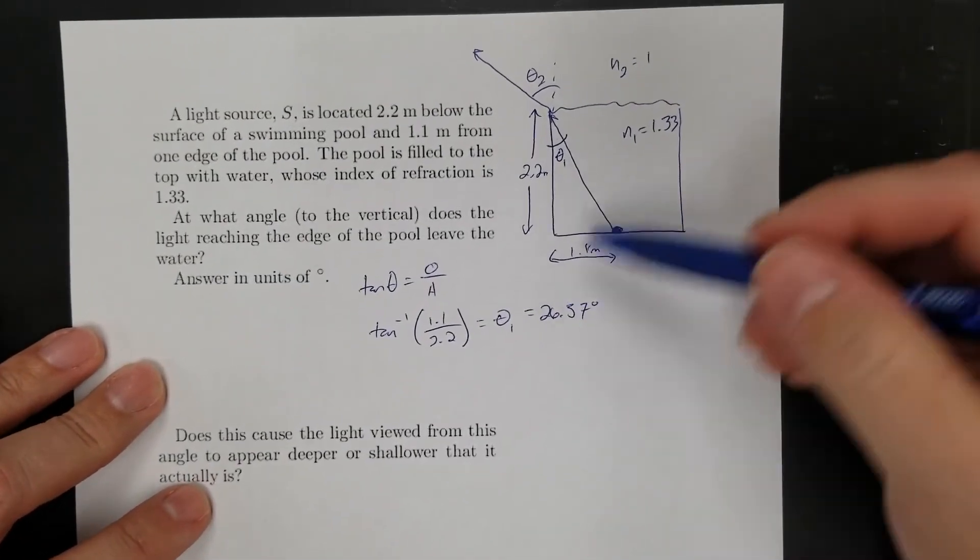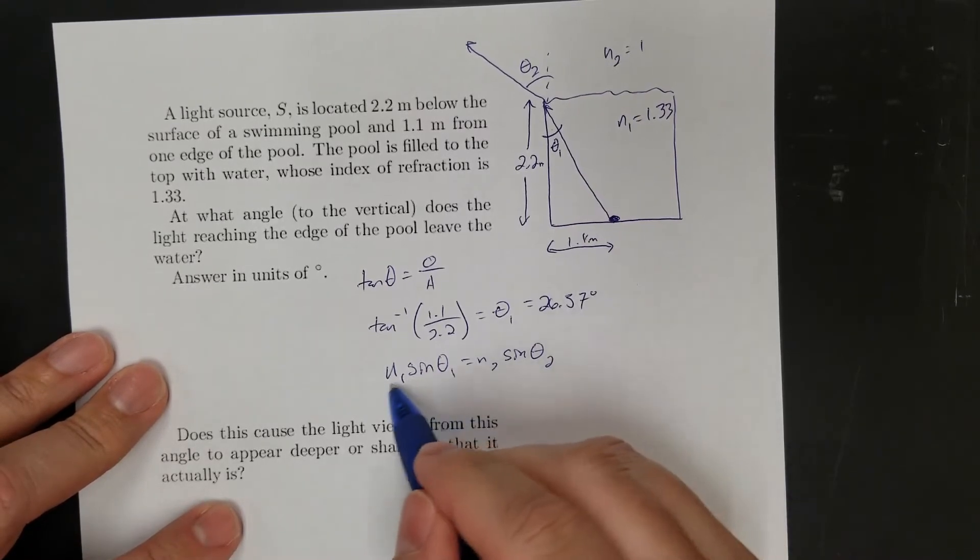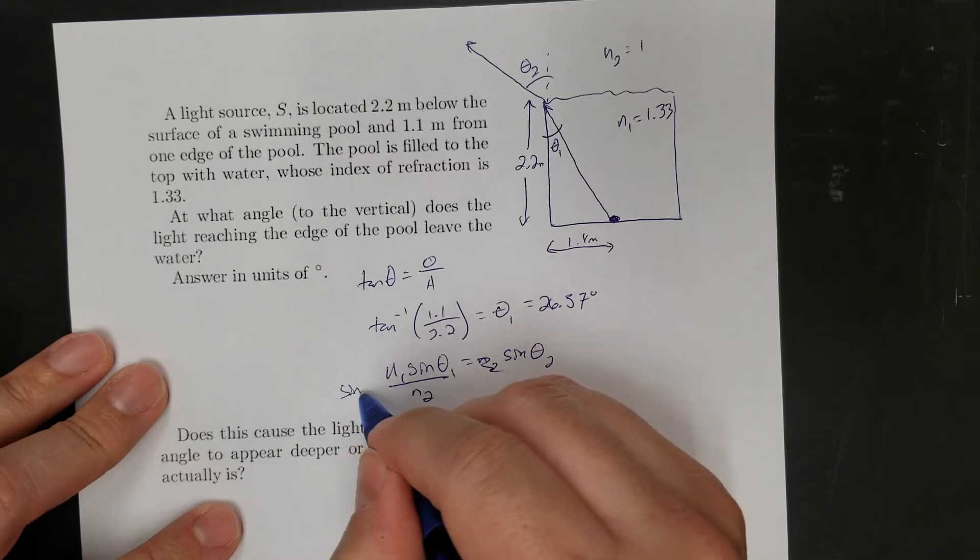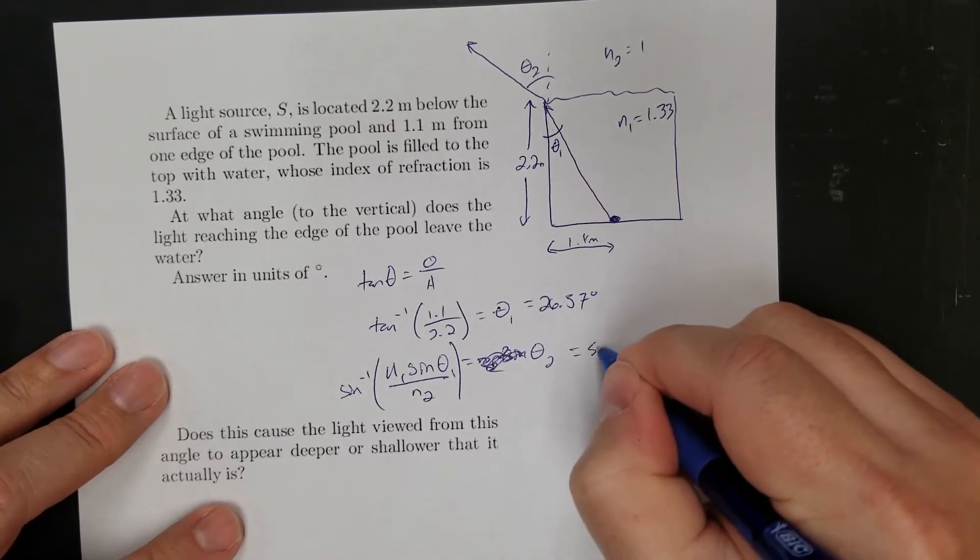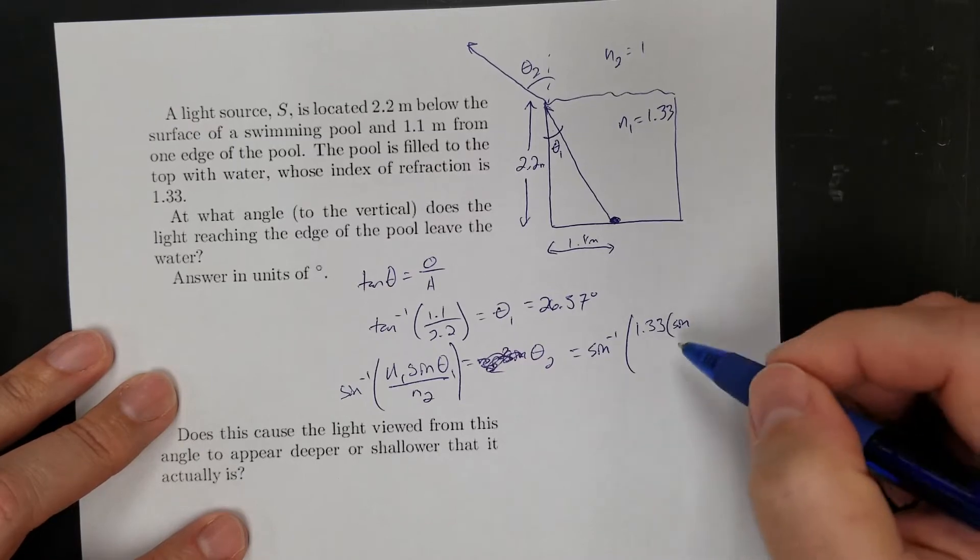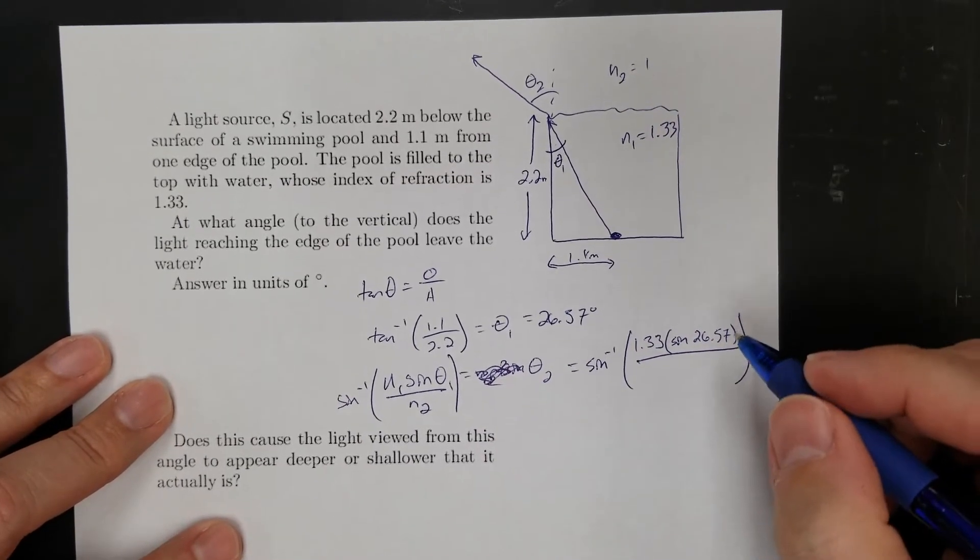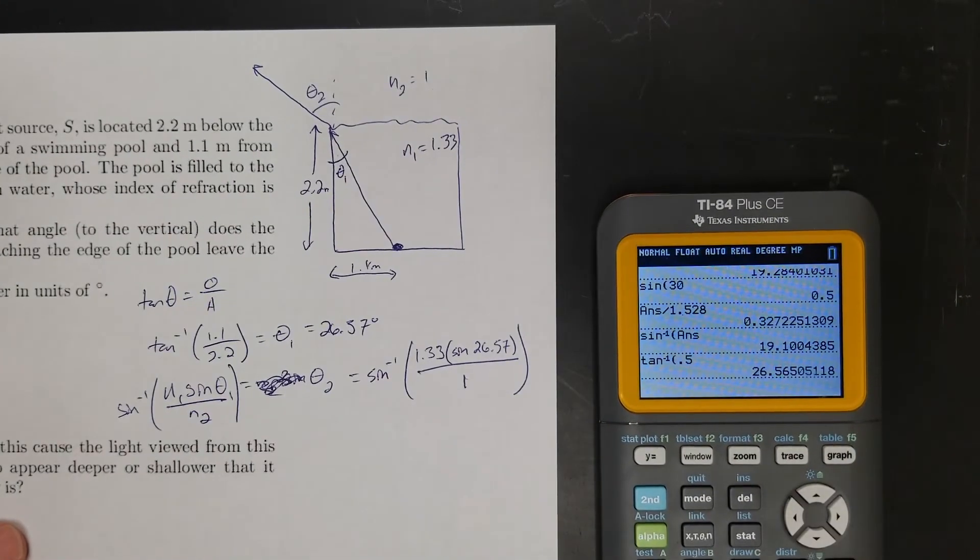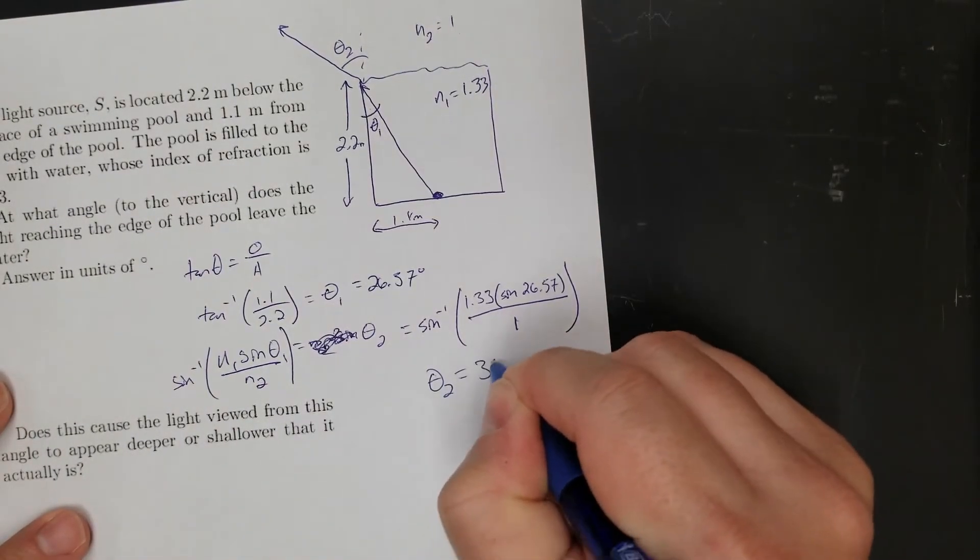So now I've got enough to solve Snell's Law. So N1 sine theta 1 equals N2 sine theta 2. And if I want angle, I divide N2 over, and then I take the arctan of that thing, get rid of the sine, and that leaves me with theta 2. So theta 2 would be the arctan of N1 is water, 1.33, times sine of 26.57 over N2. N2 is air, so that's 1. So now let's go and do that. So 1.33 sine 26.57 divided by 1 is the same thing. So now let's take the arctan of that. 36.51 degrees.